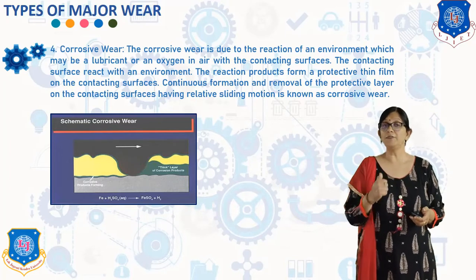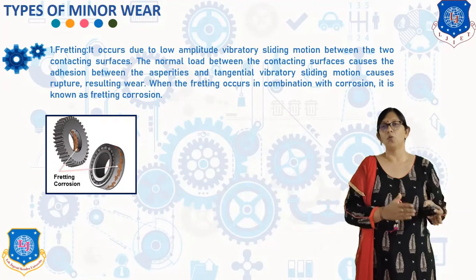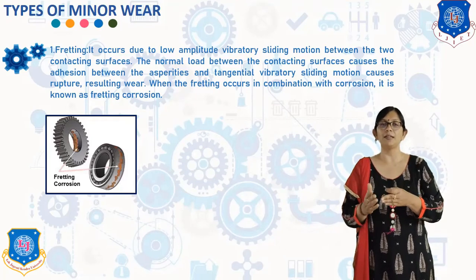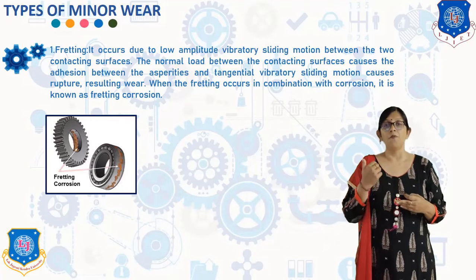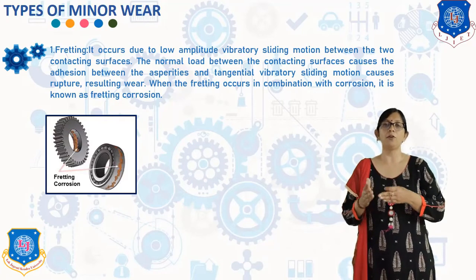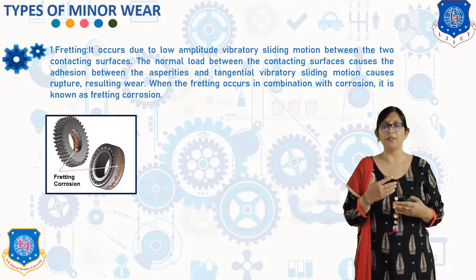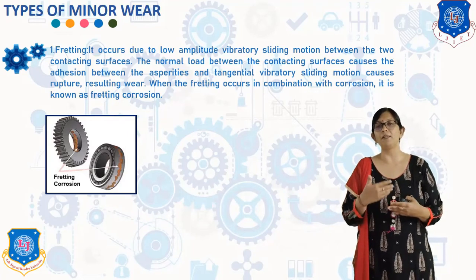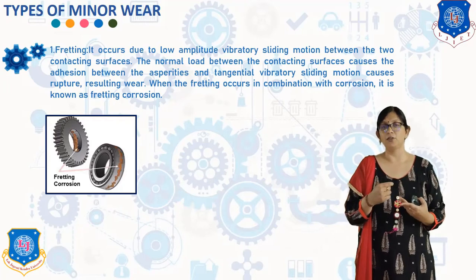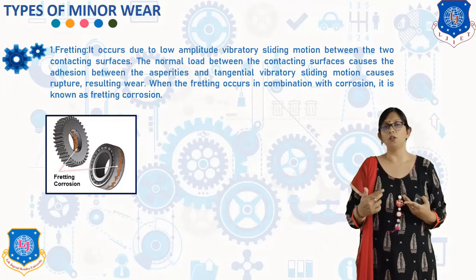The first type of minor wear is fretting. Fretting occurs due to low amplitude vibratory sliding motion between two contacting surfaces. The normal load between the contacting surfaces causes adhesion between the asperities, and the tangential vibratory sliding motion causes rupture, resulting in wear. When fretting occurs in combination with corrosion, it is known as fretting corrosion. Fretting is essentially a micro form of adhesive or abrasive wear. As many corrosion products are harder than their parent metal, fretting corrosion may also lead to abrasion.